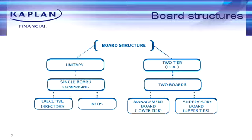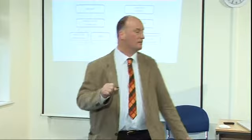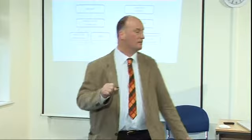The two-tier board, the second type, is commonly used in France and Germany. They have what's called a management board and a supervisory board. The management board consists exclusively of executive directors, and the supervisory board of non-executive directors.